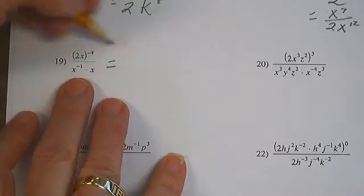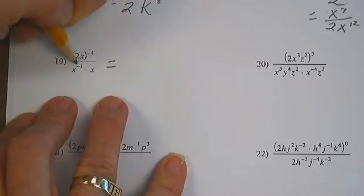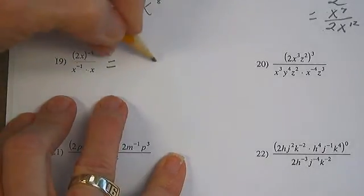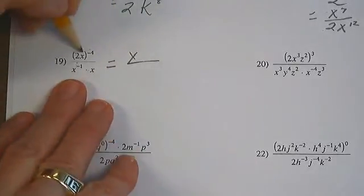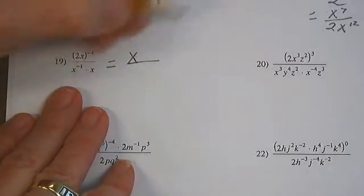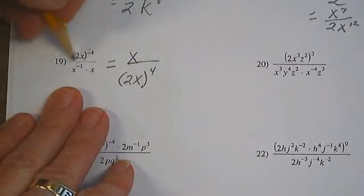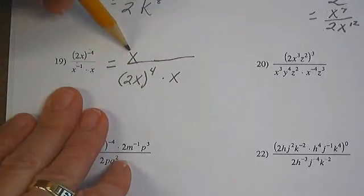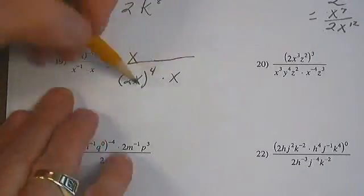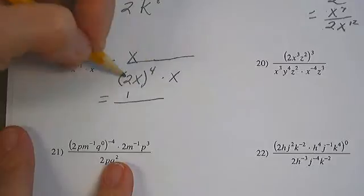Number 19: 2x to the negative 4th over x to the negative 1st times x. X to the negative 1st gives me an x in the numerator. 2x to the negative 4th gives me 2x to the 4th in the denominator times x. But x divided by x is 1.